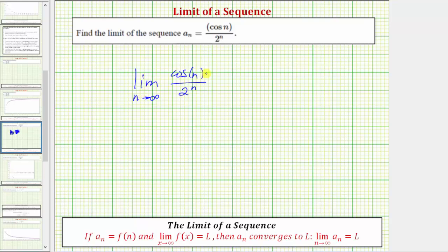So focusing just on the numerator, we should recognize that the cosine function only has outputs on the closed interval from negative one to one, and therefore as n approaches infinity, it doesn't approach a particular value, but it will always have a value over the closed interval from negative one to one.